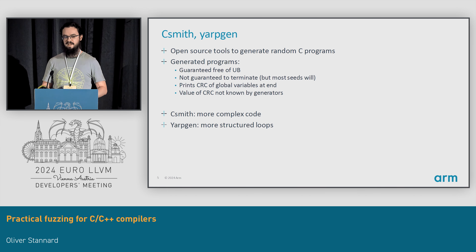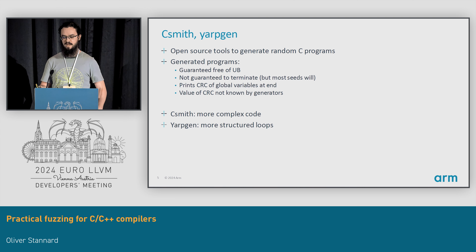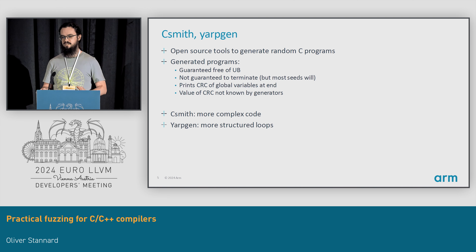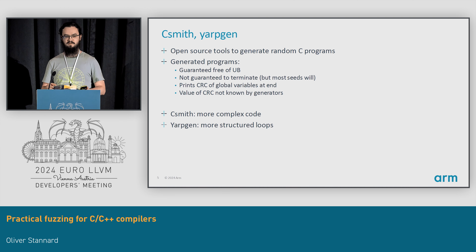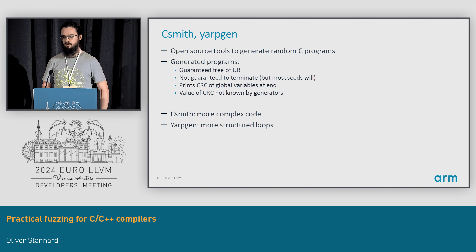The first related pair of code generators I use are CSmith and YarpGen. These are open source tools written by a team at the University of Utah. Both of them generate large complicated C programs with lots of short-circuit operators, embedded assignments, and expressions that are about 10 screenfuls wide. These do a lot of complicated code and then at the end print out a checksum of all the global variables they modified. These are guaranteed to be free of undefined behavior, though they're not guaranteed to terminate — maybe 90% of the time they will. CSmith tends to be better for more complicated branchy code with embedded assignments inside expressions and short-circuit operators. YarpGen came later and was designed to do more structured loops that iterate over arrays, designed to trigger loop optimizations more and test them.